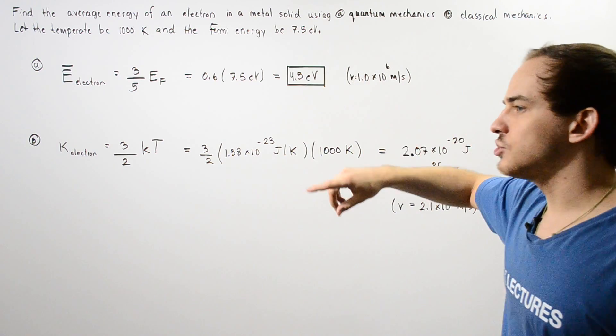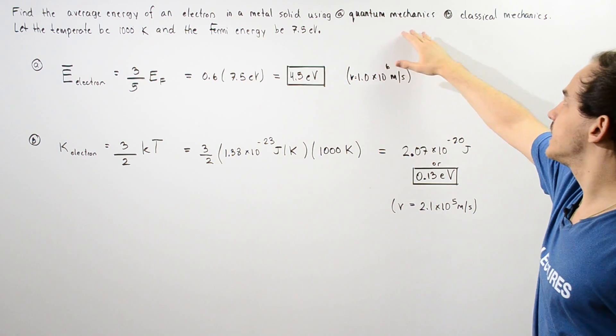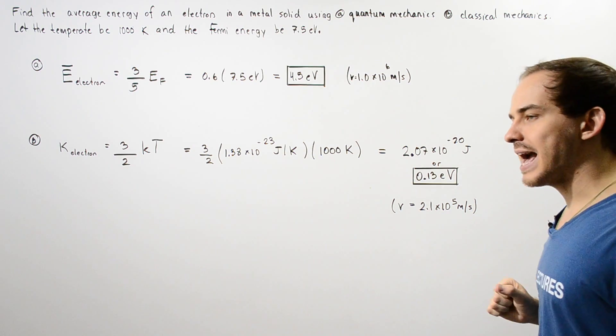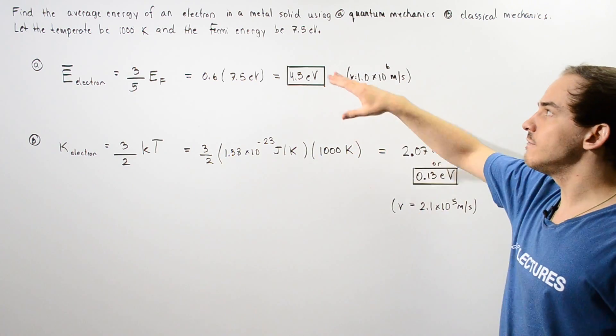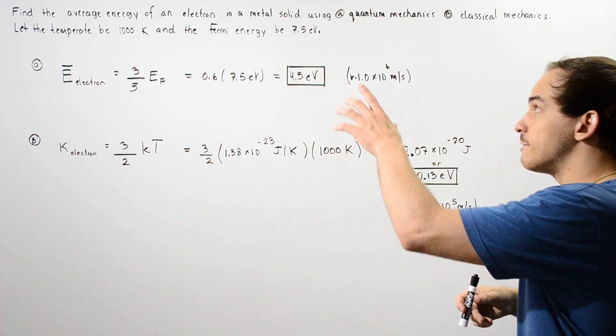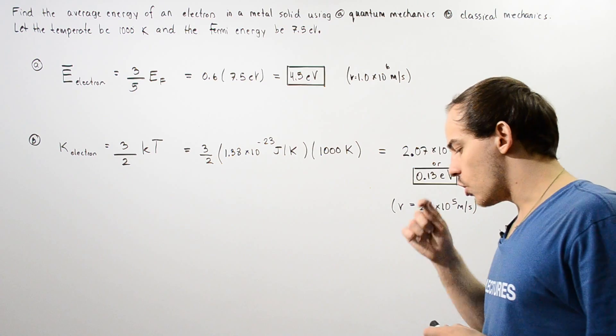Find the average energy of an electron in a metal solid using (A) quantum mechanics and (B) classical mechanics, assuming that the temperature is 1000 Kelvin and the Fermi energy is 7.5 electron volts.